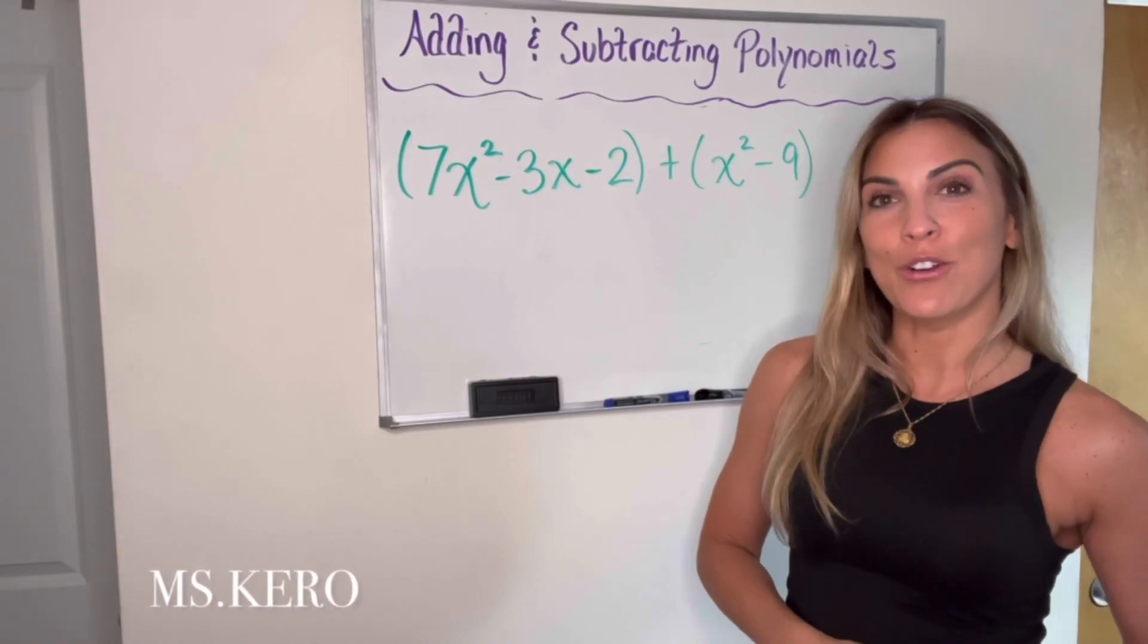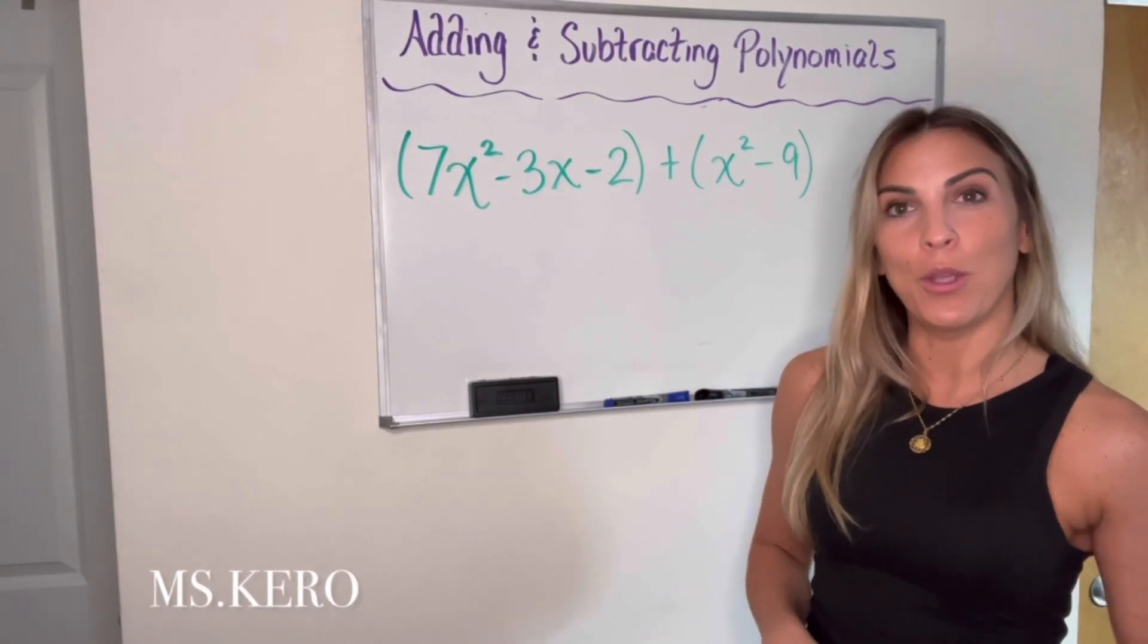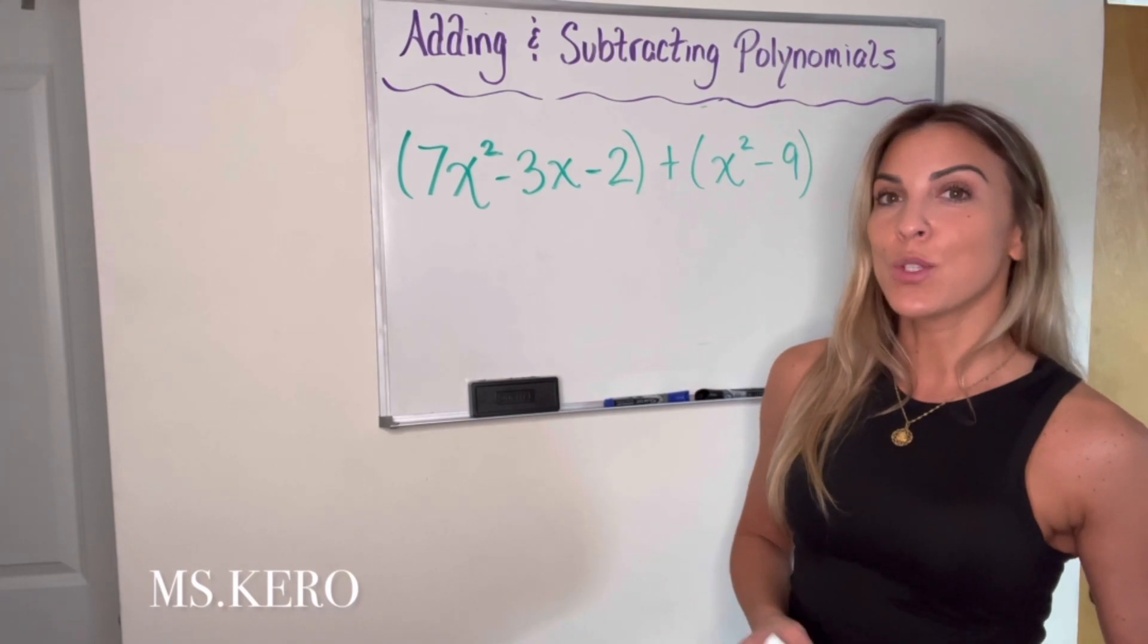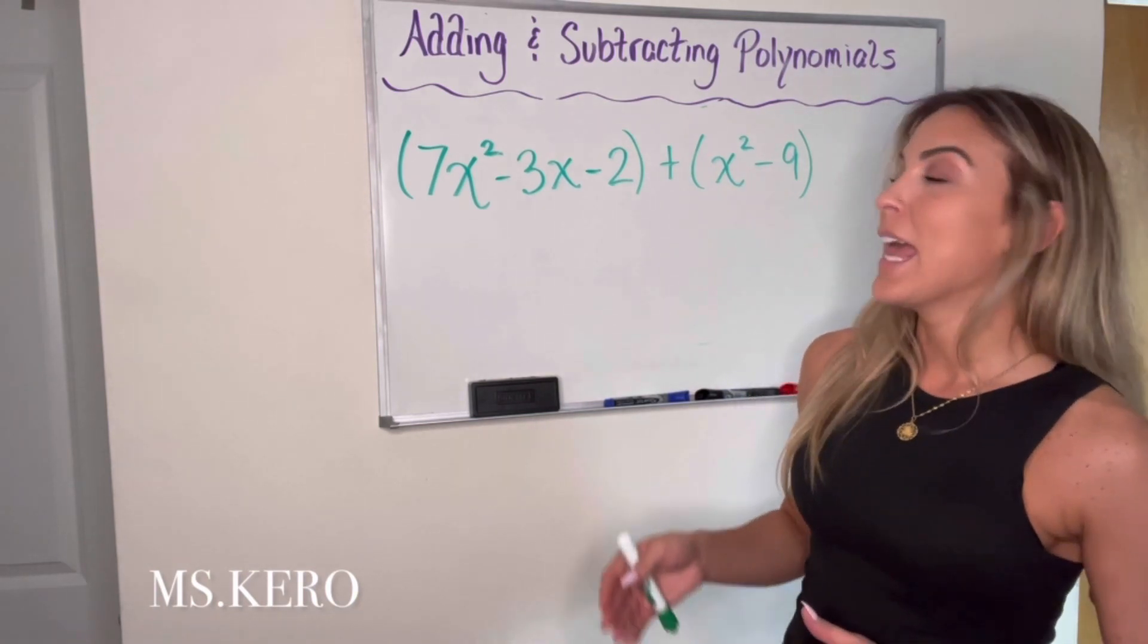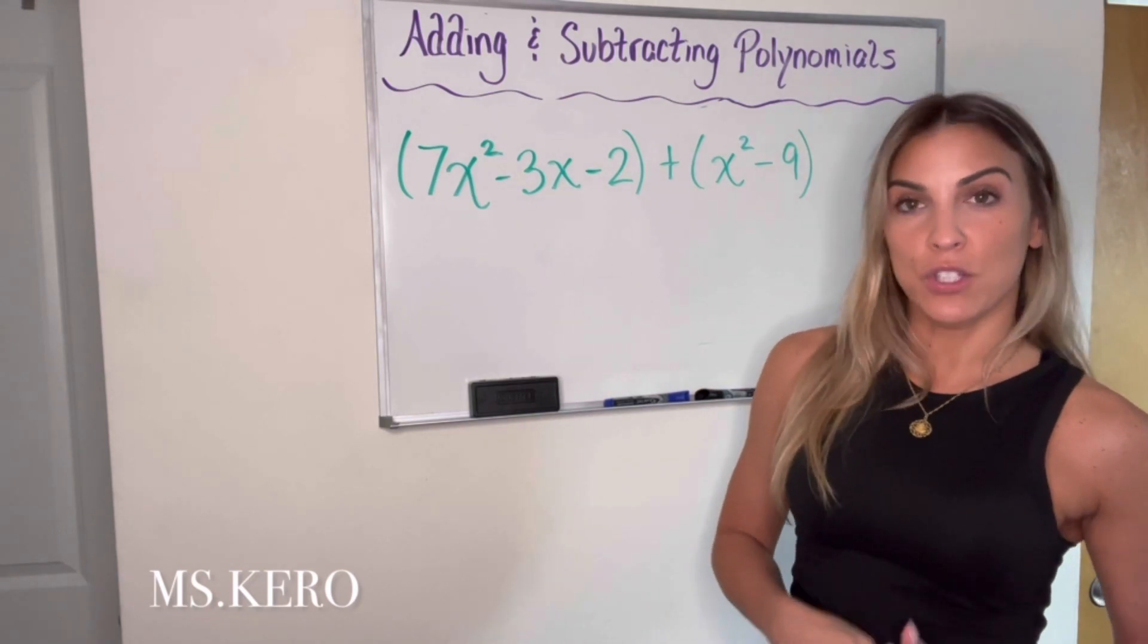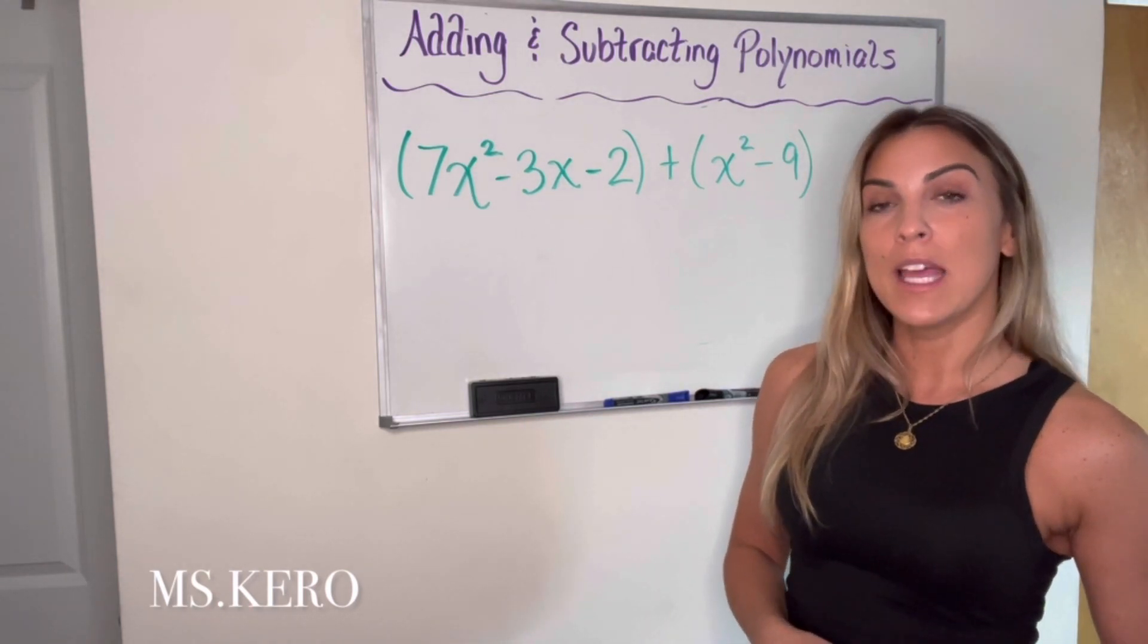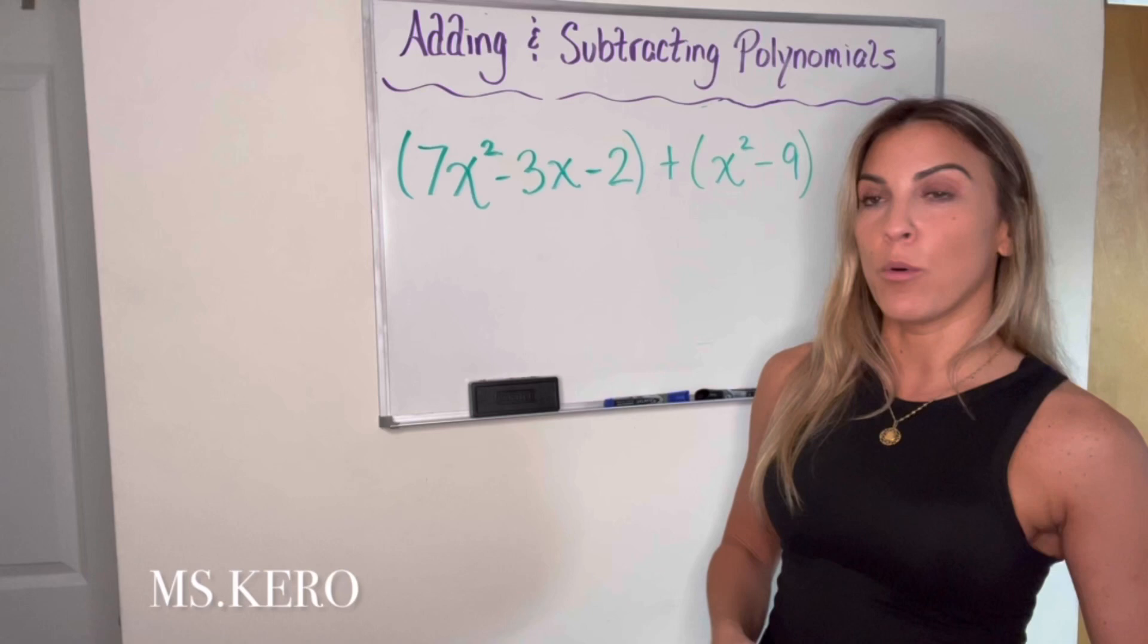In today's algebra lesson, we're going to learn how to add and subtract polynomials to simplify expressions. So the most important thing to know when you are adding and subtracting terms is that they have to be like terms. And what I mean by like terms is they have the same variable, same exponent.